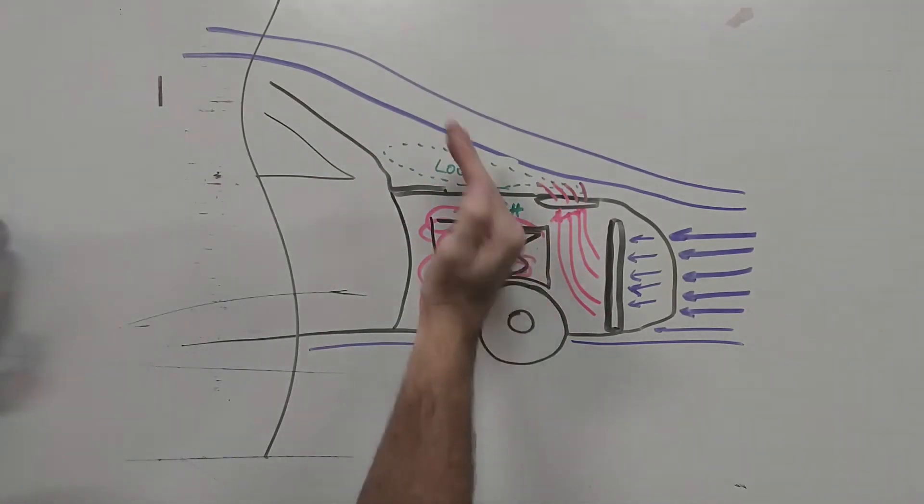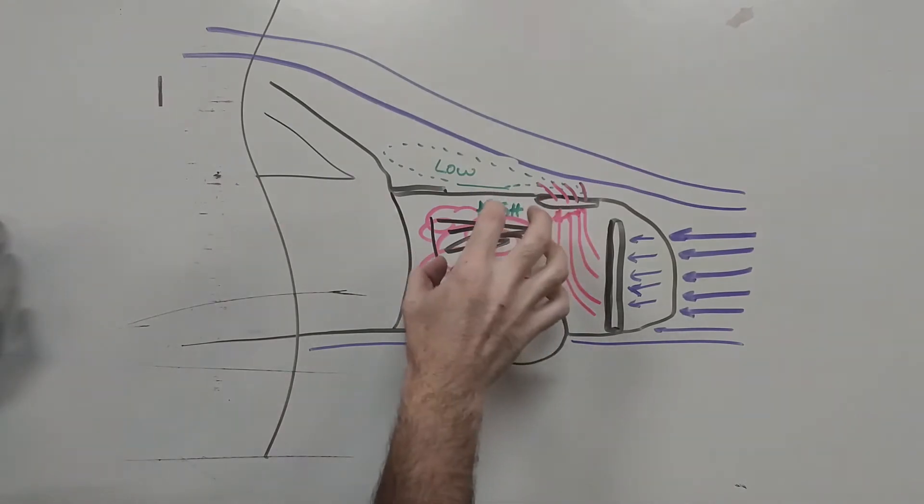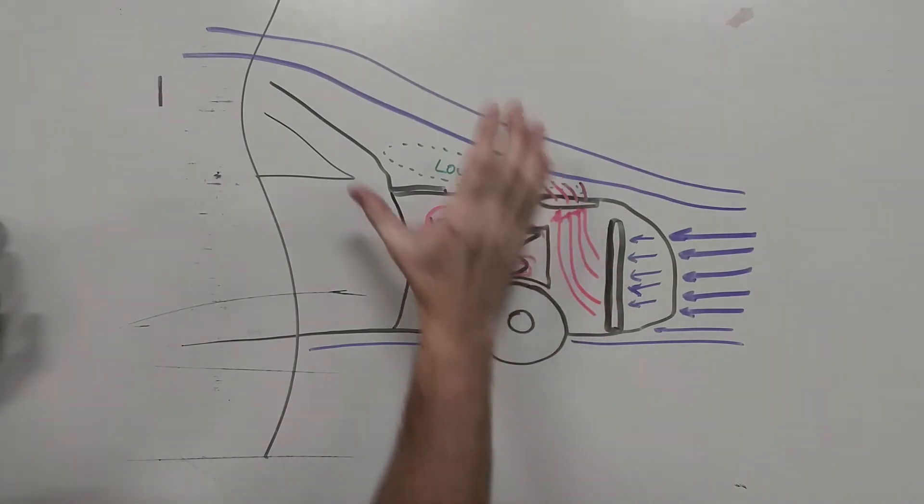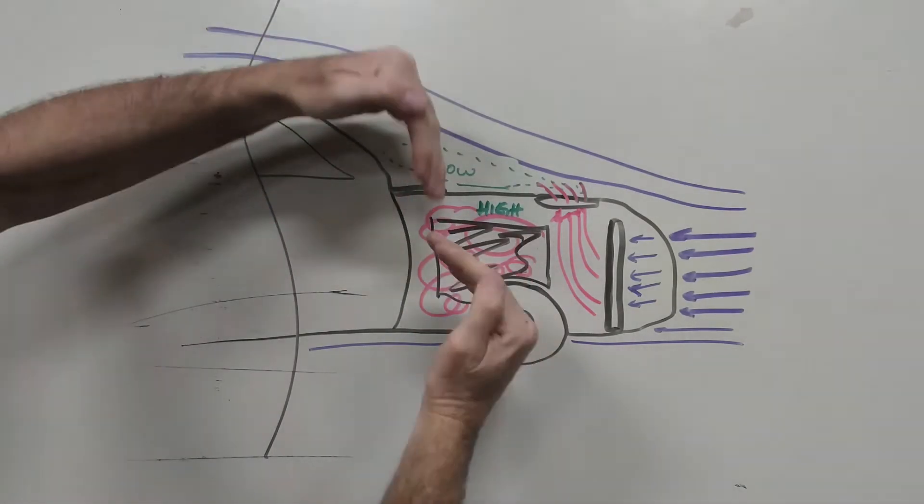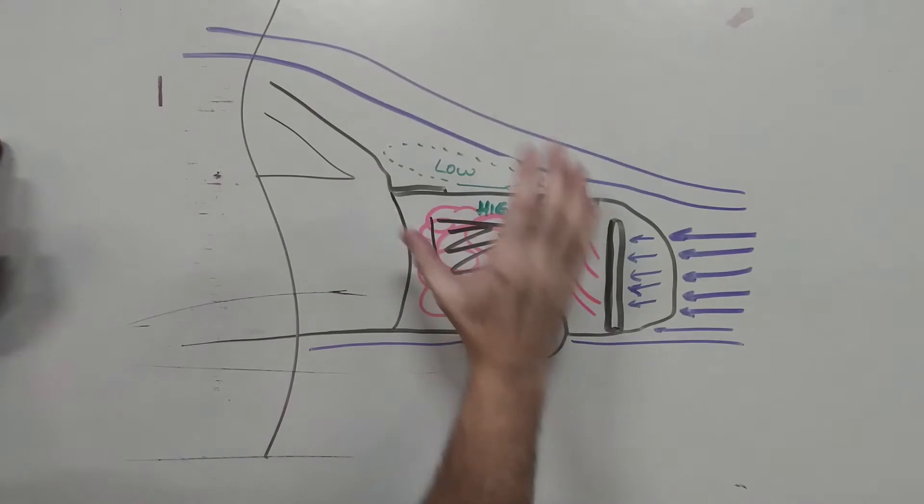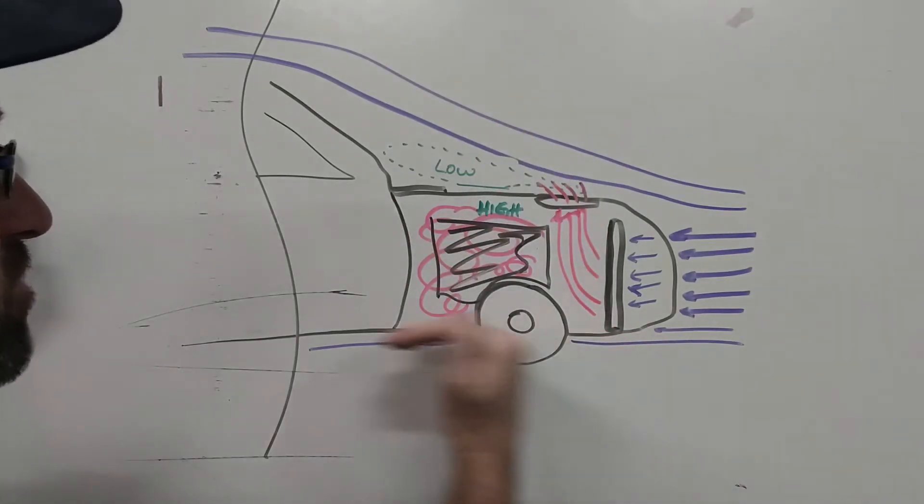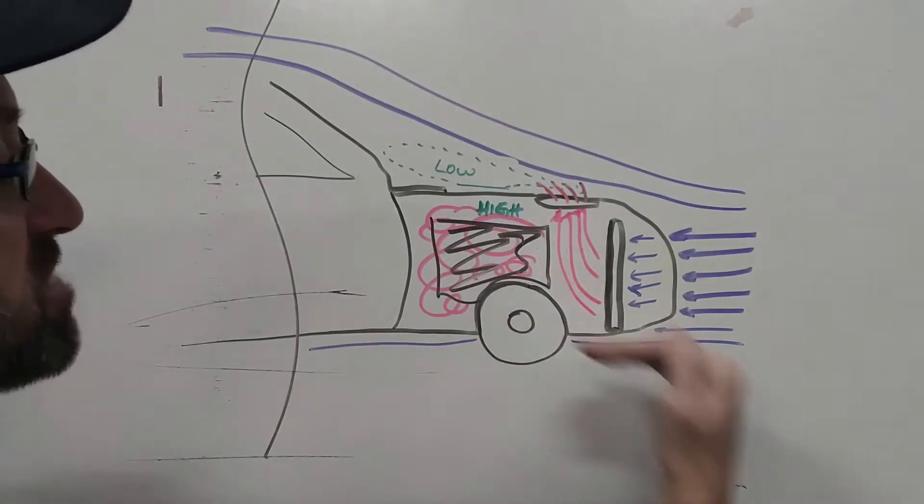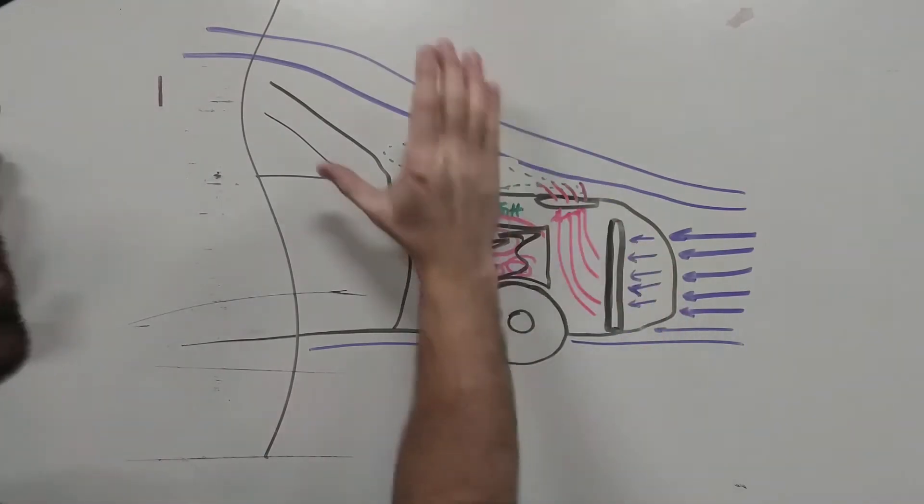So high pressure wants to push to low pressure, and actually this pressure buildup here pushes up where this low can't push back down—they're not equal. So this high pressure actually helps lift the car, especially with airflow going underneath. It all helps to kind of push up this way.